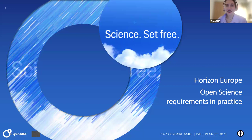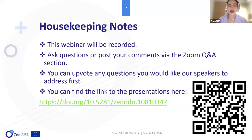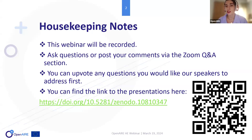Hello, welcome everyone to another training webinar of OpenAir. Today is the fifth version of our Horizon Europe Open Science Requirements in Practice webinar. This webinar is being recorded and we will share the recording shortly afterwards. To ask questions or share comments, you can use the Zoom Q&A section, and you can also upvote questions you'd like addressed first. You can find the presentations at this link or scan the QR code on this slide.